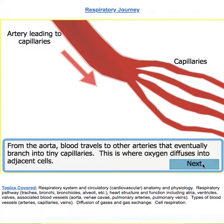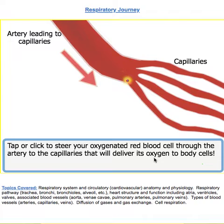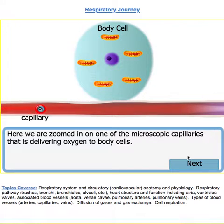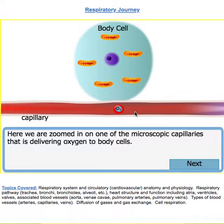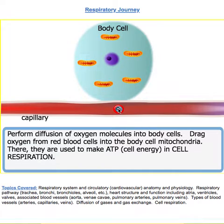Let's follow our little red blood cell as it travels down to the lower body. It's going through big arteries, which then travel to small arteries, which are called capillaries. Here the capillary has taken us to a body cell — it could be any cell. All cells require oxygen to function because all cells undergo cellular respiration.